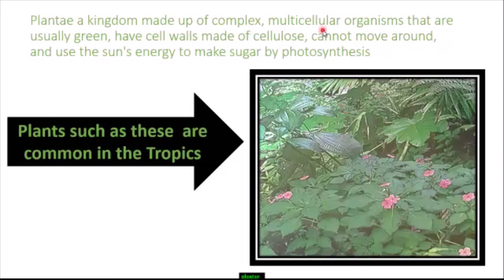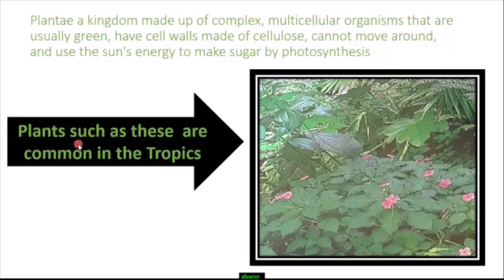Plantae is a kingdom made up of complex multicellular organisms that are usually green, have cell walls made of cellulose, cannot move around, and use the sun's energy to make sugar by photosynthesis. Plants such as these are common in the tropics.